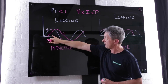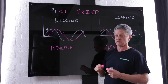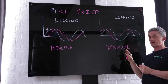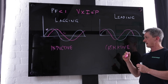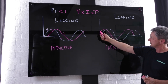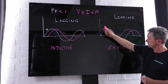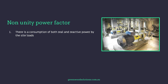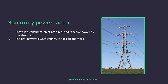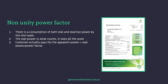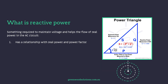The amount of reactive power is determined by how out of phase the current is from the voltage. In a site that has a capacitive scenario, it has a leading power factor — the current leads the voltage, but the same principle applies. In reality, there is a consumption of both real and reactive power by site loads. The real power is what counts — it does all the work. But the consumer actually pays for the apparent power, which is real power divided by the power factor. Reactive power has a relationship with real power and power factor.